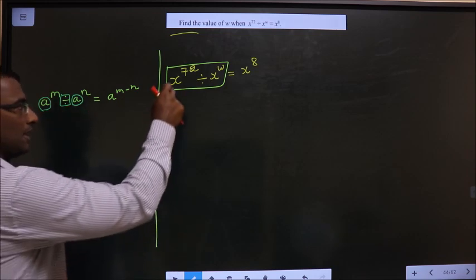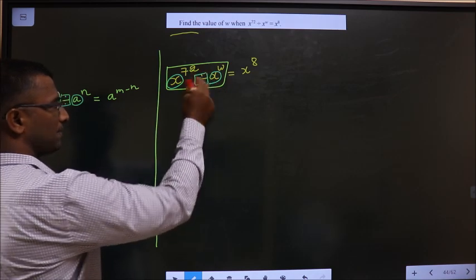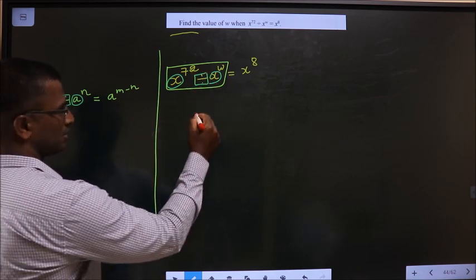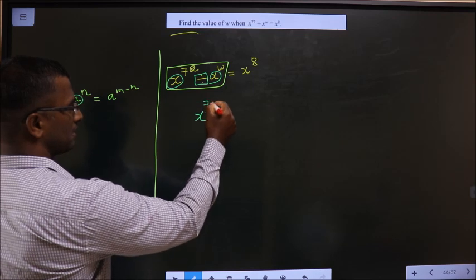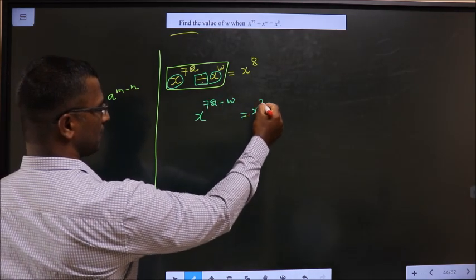Same here. The bases are same, it's division. So subtract the powers. You get x^(72 minus W) equals x^8.